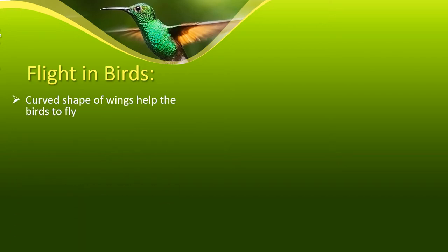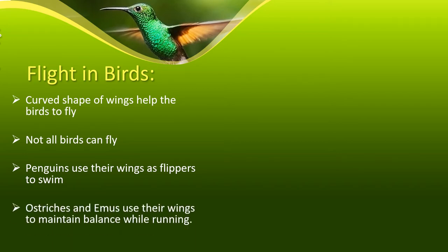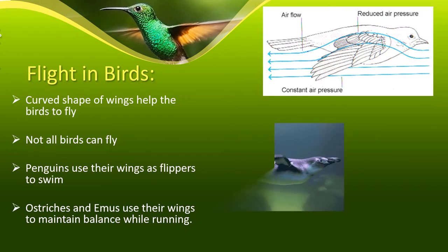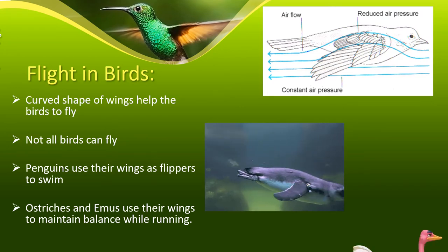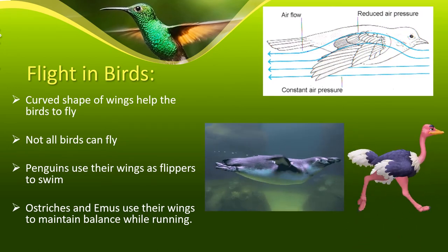The curved shape of a bird's wing makes the air above move faster than the air below. The slower air below the wings pushes the bird up and the bird flies. A bird moves forward by flapping its wings, which pushes the air back.